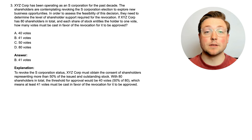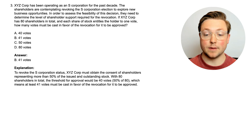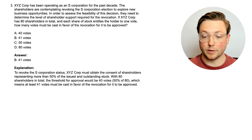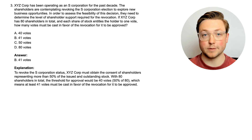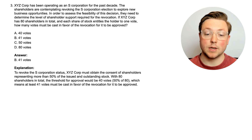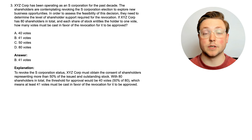They would have to have at least 41 votes. To revoke the S-corporation status, XYZ Corp must obtain the consent of shareholders representing more than 50% of the issued and outstanding stock. With 80 shareholders in total, the threshold for approval would be 40 votes — 50% of 80 — and since it has to be more than 50%, at least 41 votes must be cast in favor of the revocation for it to be approved. So termination typically occurs because they stopped meeting one of the qualifications, and they can also revoke their S-corporation status if more than 50% of the shareholders decide to do so.